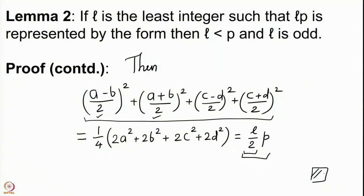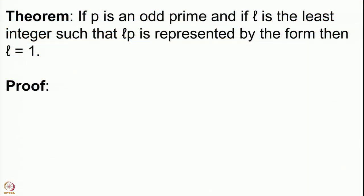With these two lemmas, let us prove Lagrange's theorem. We are going to prove that every odd prime is represented by the form, and then Lagrange's theorem will follow very soon. The theorem states: if p is an odd prime and l is the least positive integer with lp represented by the form, then l = 1. We start by assuming l ≠ 1 and deriving a contradiction.